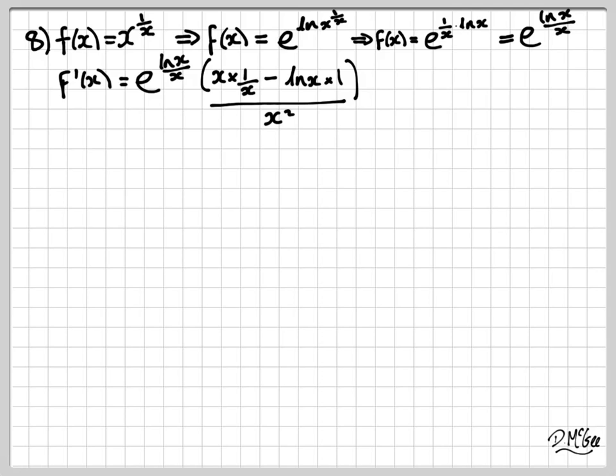v times du by dx, which is x times 1 over x, minus u times dv by dx, which of course is then going to be ln x times by 1, divided by v squared. And you should see I get this expression. I'll tidy it up a little bit. First of all, just taking care inside the bracket.